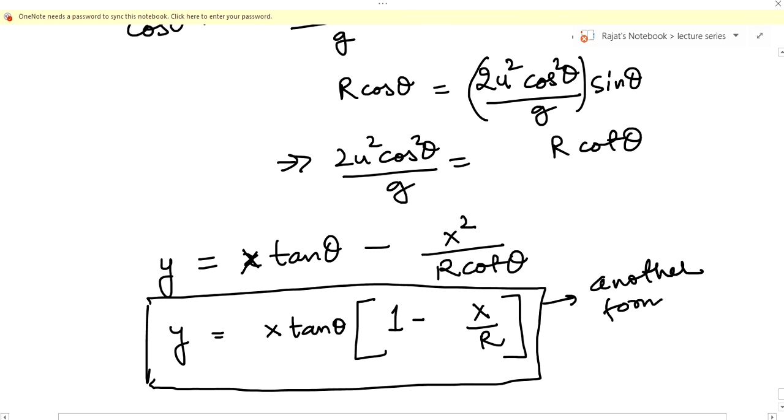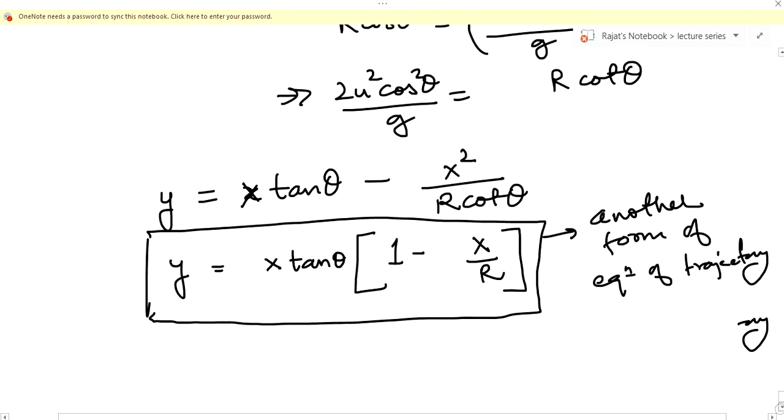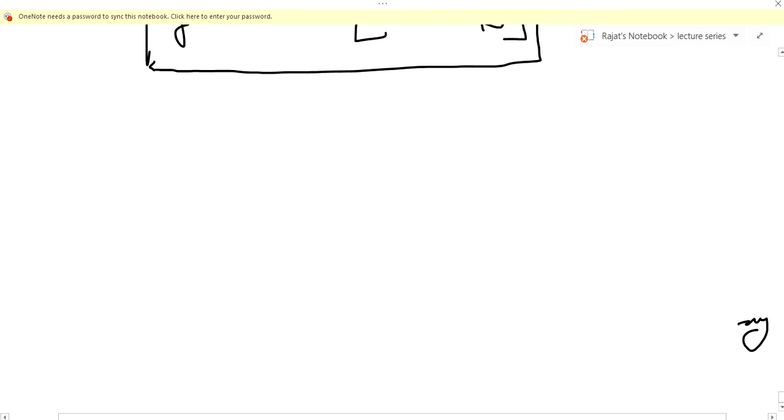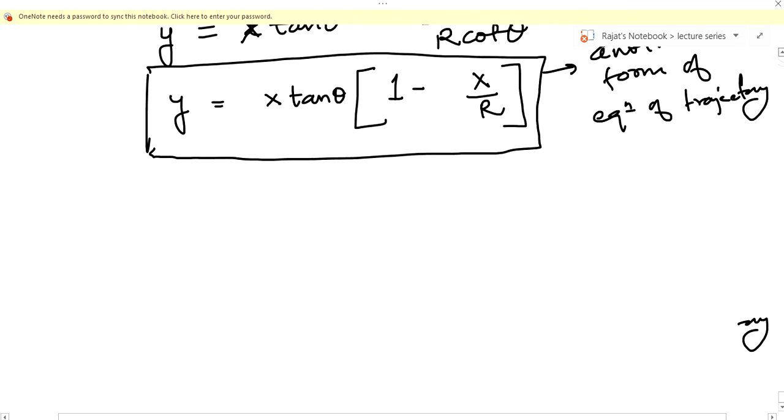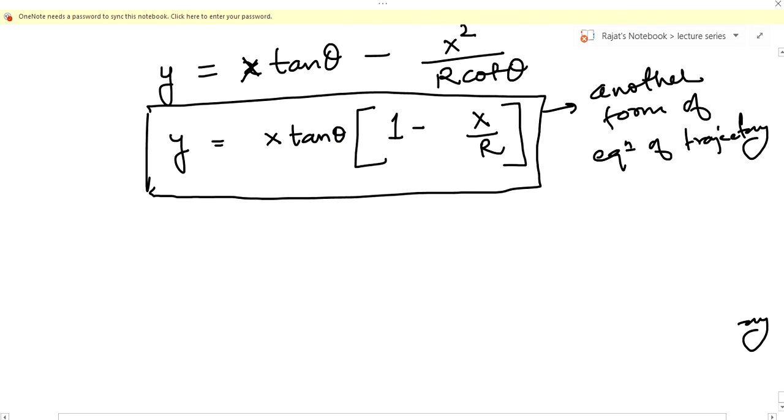Now we can use this form in this question very easily because the range is given to us. It is asking us what will be the height when the projectile has moved R by 4 in the horizontal direction.